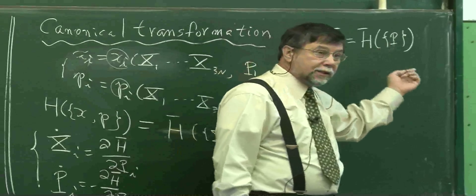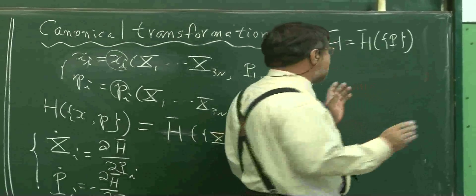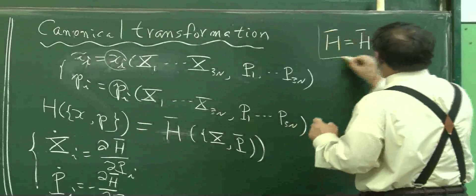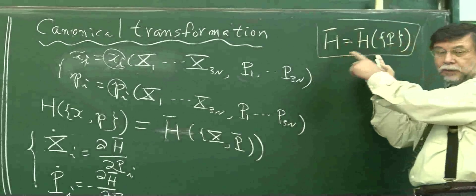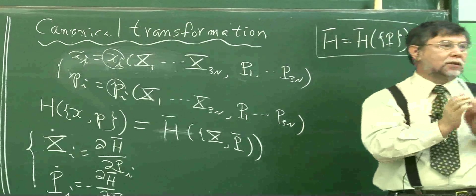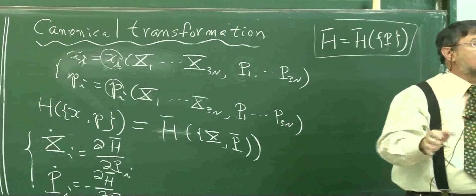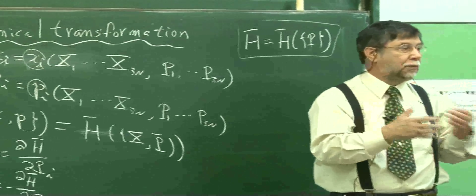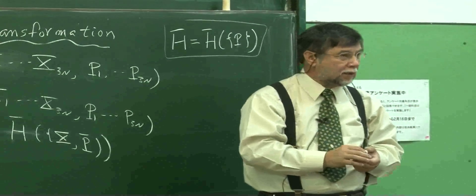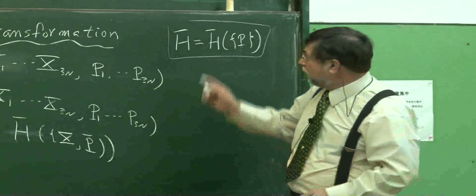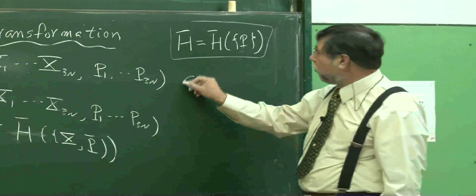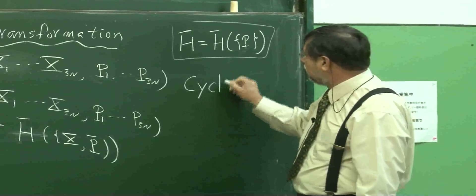Now, therefore, the Hamiltonian which only depends on the generalized momentum plays a special role when we play the dynamics. That kind of special form of the Hamiltonian is called cyclic Hamiltonian.